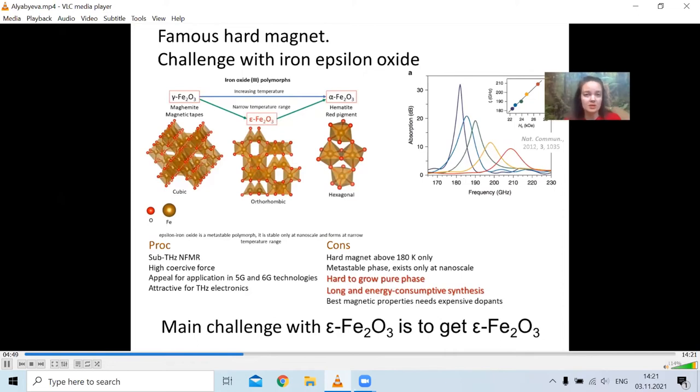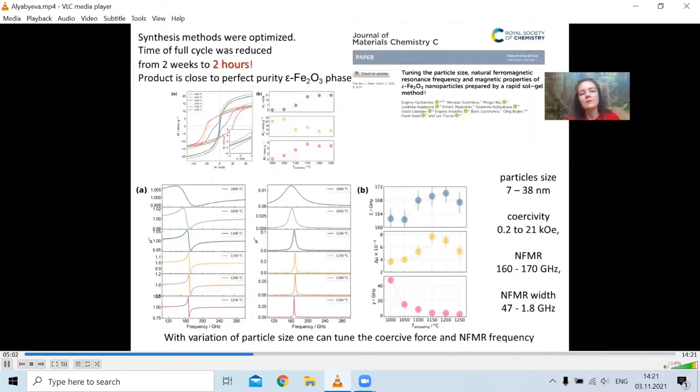Current growth processes are rather long and rather energy-consumptive. And the outcome product contains not only epsilon iron oxide, but some additional impurities, unintentional. Well, playing with the synthesis methods, we were able to optimize it and to reduce the cycle of the growing of the phase from two weeks up to two hours. The outcome product contained almost perfectly pure epsilon iron oxide phase.